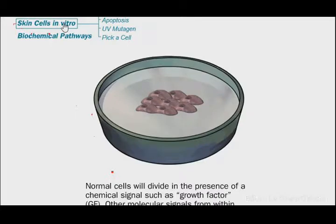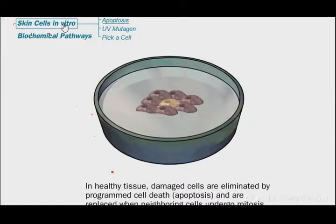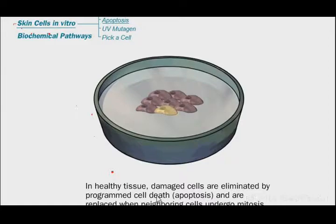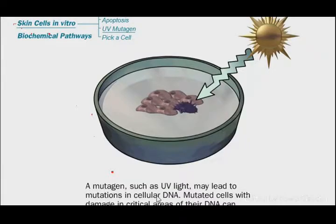Normal cells will be divided in the presence of chemical signals such as growth factors and other molecular signals from within cells. In healthy tissues, damaged cells are eliminated by programmed cell death, apoptosis. Cell death through this process is a very natural process when it is used.